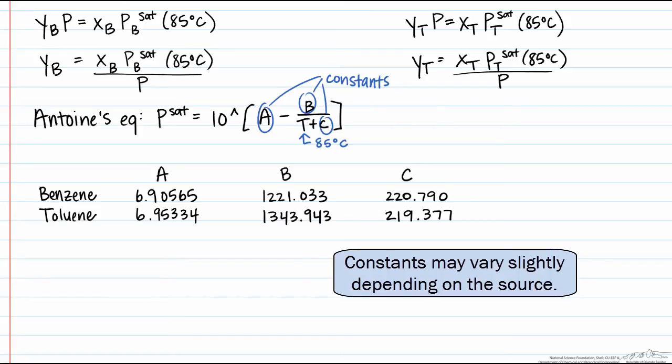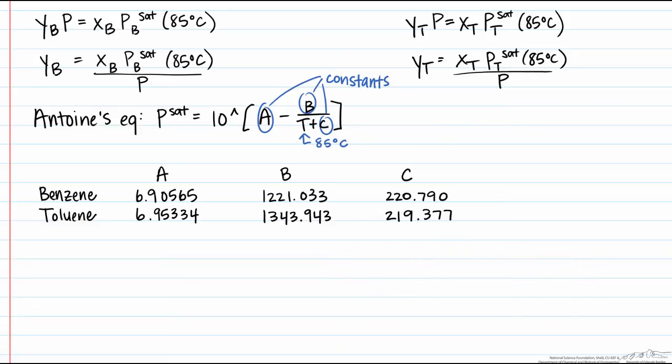We put these into Antoine's equations for, first for benzene and then for toluene, and we end up with saturation pressures of p sat equals 807.7 mm of mercury for benzene, and p sat equals 345.1 mm of mercury for toluene.